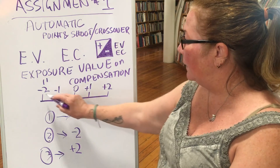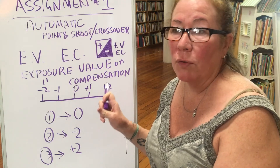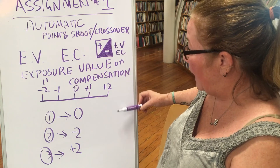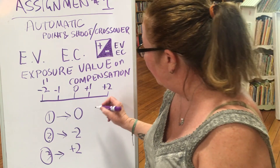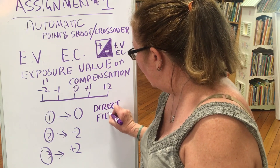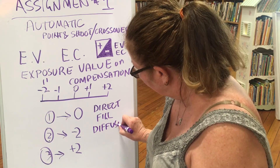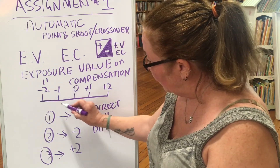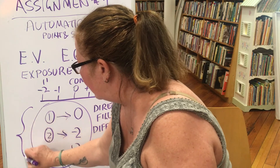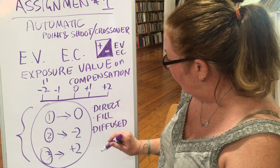You're going to use this EV meter to change settings on your camera, and I'll show an example of that in the live demo. For your automatic camera settings, for each type of light — direct, fill, and diffused — you're going to take three photographs using those three EV bracket settings, for a total of nine images. These are called a bracket, and we'll talk about that as well.